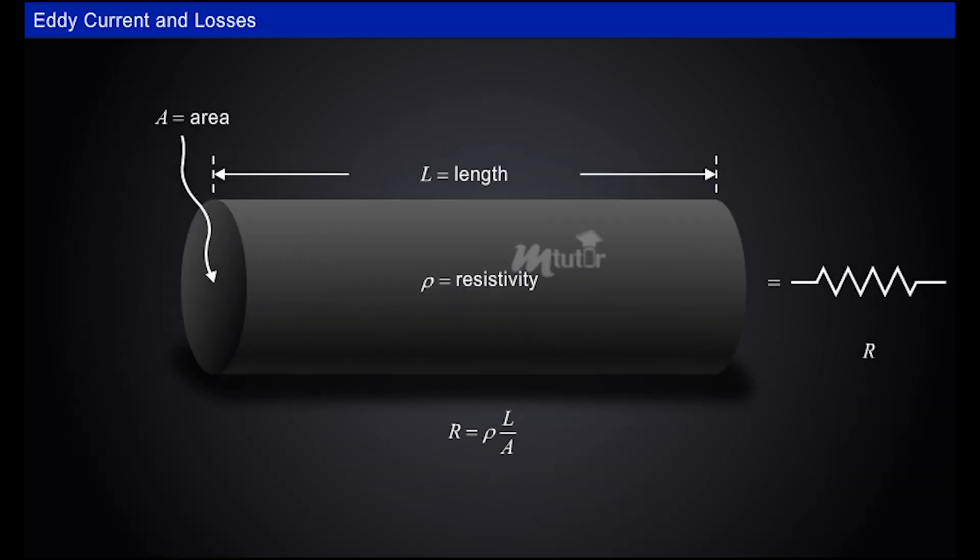As the eddy current flows in the whole surface of the rotor core, the resistance offered by the rotor is minimum due to maximum cross-sectional area, and hence the induced eddy currents will be maximum.